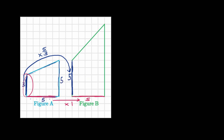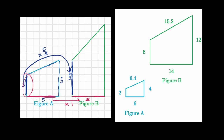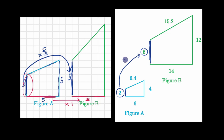Let's do another example. Is figure B a scaled version of figure A? Pause the video and see if you can figure it out. We're going to do the same exercise. Here they've given us the measures of the different sides. This side has length two, and the corresponding side has length six. To go from two to six, you multiply by three. Looking at the next pair of potentially corresponding sides — four to twelve — you would again multiply by three. So that is looking good so far.